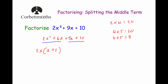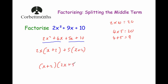The second half of the expression is 5x plus 10. The common factor of 5x plus 10 is 5, so we take a 5 out and get plus 5 bracket x plus 2. Both brackets contain x plus 2, so we take x plus 2 out as a common factor, leaving 2x plus 5. So the answer to factorising 2x squared plus 9x plus 10 is (x + 2)(2x + 5).